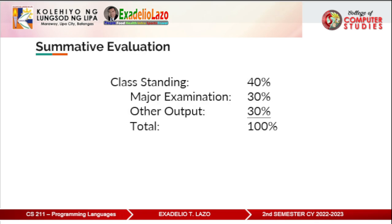For the summative evaluation: class standing is 40%, major examination 40%, other output 30%, for a total of 100%.